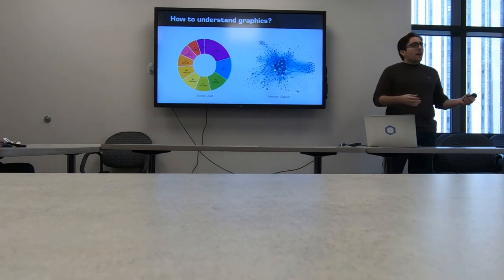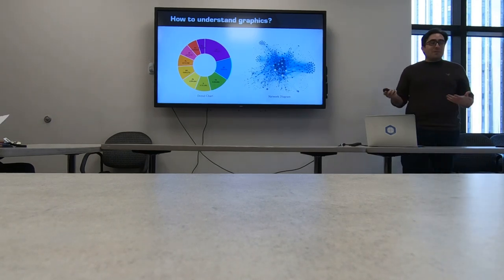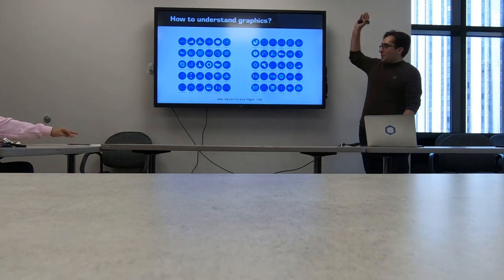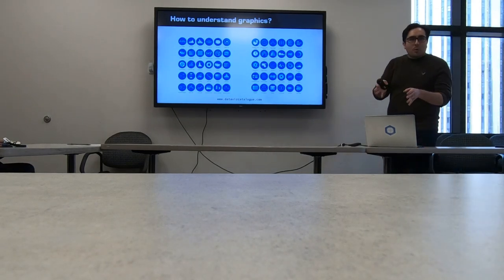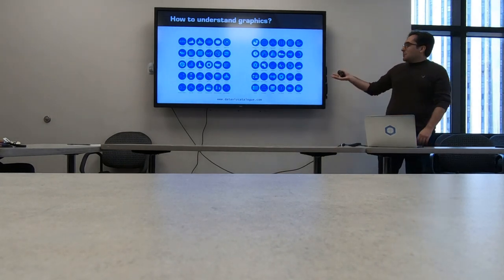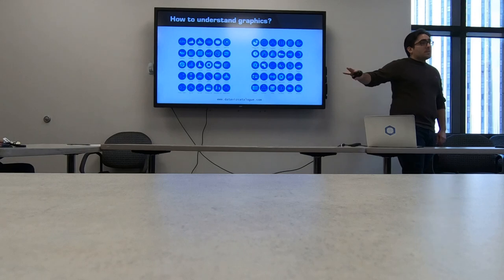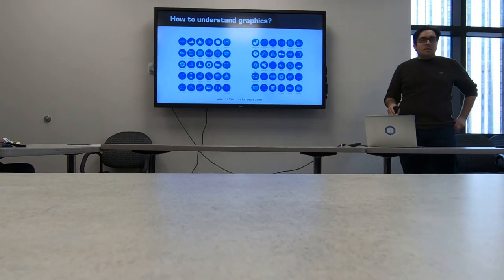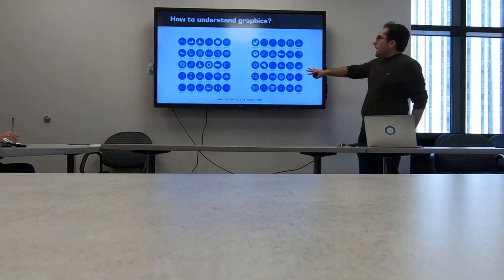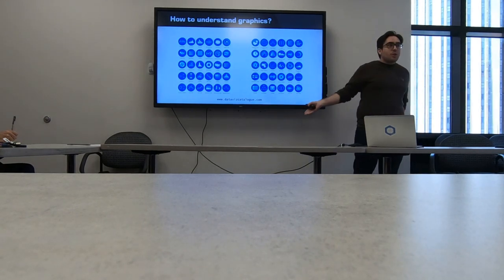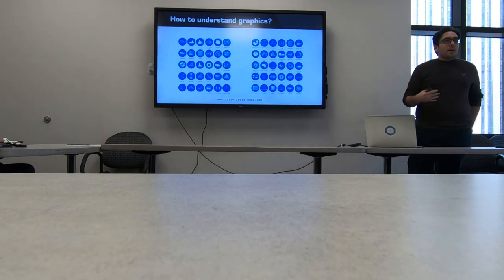These are all different types of graphs — there's a lot of variety. Some people have spent a lot of time categorizing all these things. If you go to dataviscatalog.com there's just a million of these different types. But I think thinking about data viz in these discrete categorical terms is really limiting. So what I want you to do is move beyond just thinking about charts as pie charts or donut charts or scatter plots, and instead think about these as elements you could combine or iterate on — kind of like prototypes.